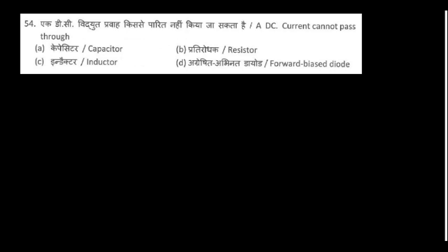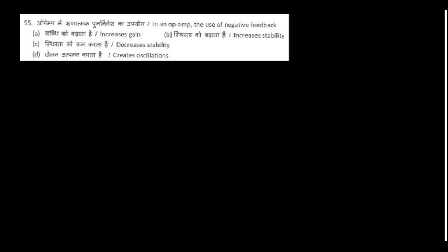A DC current cannot pass through a capacitor. In an op-amp, the use of negative feedback decreases the gain but increases the stability.